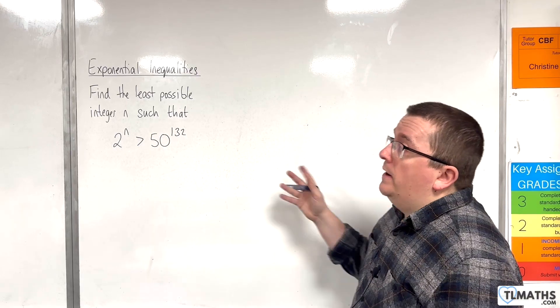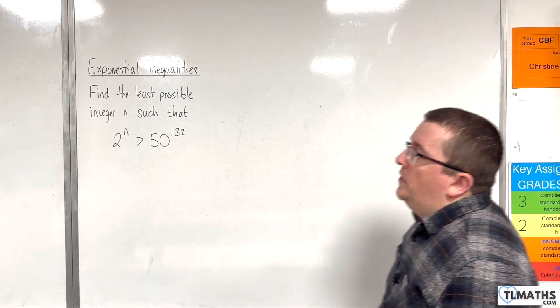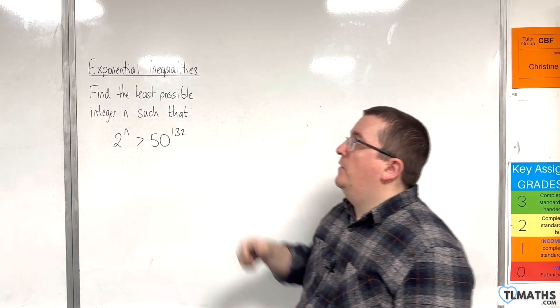So, in this video, we need to find the least possible integer n such that 2 to the n is greater than 50 to the power of 132.